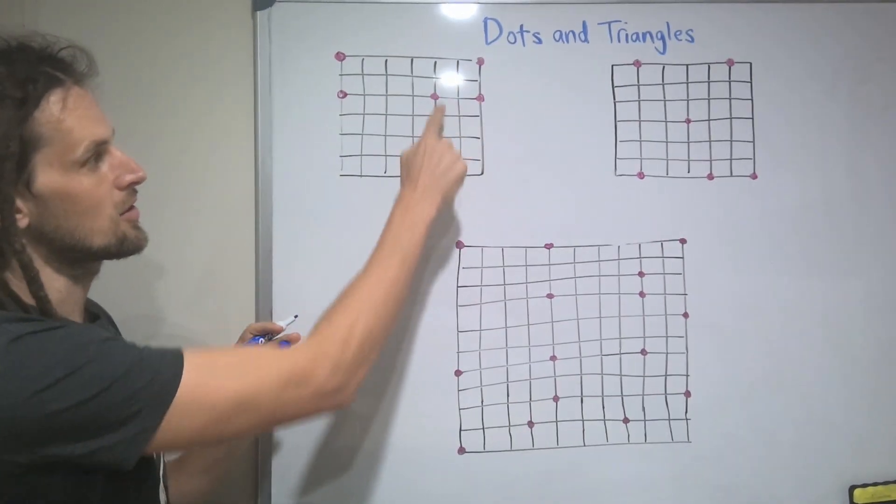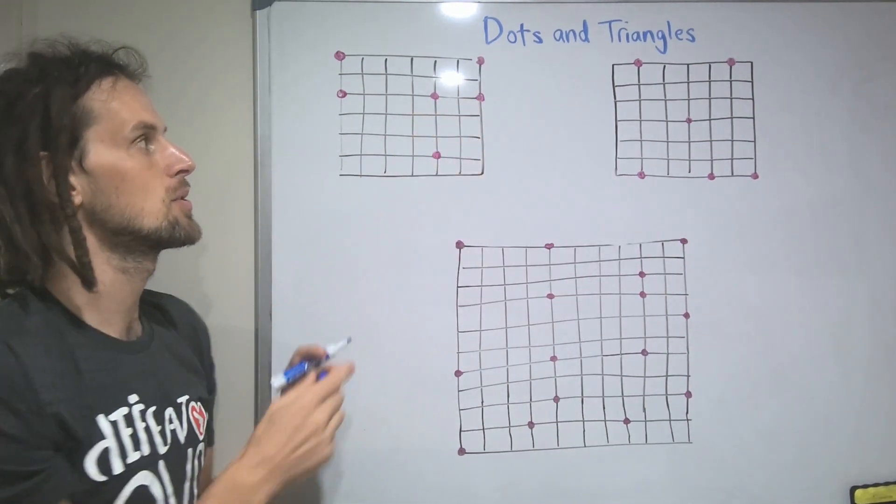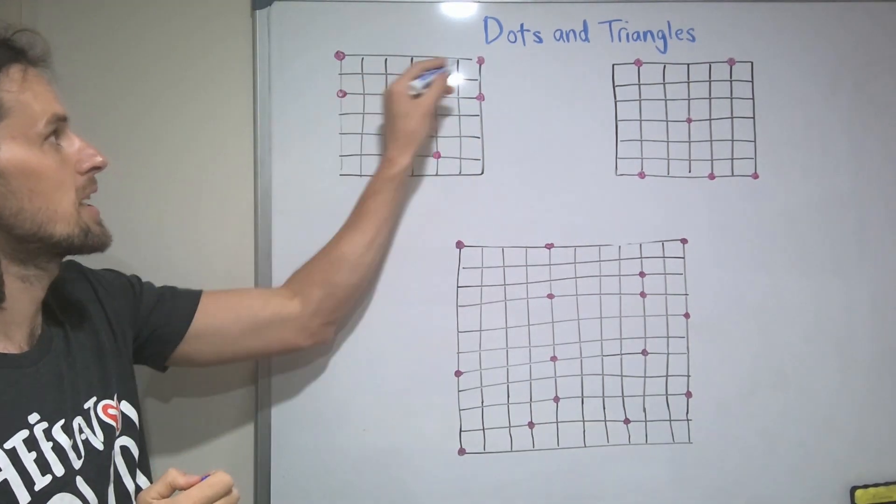But if we do that, these three dots are the only three we've got left over. And if you join them, it's got a base of three and a height of two. And that's not going to give us an area of six. So those three don't join there.